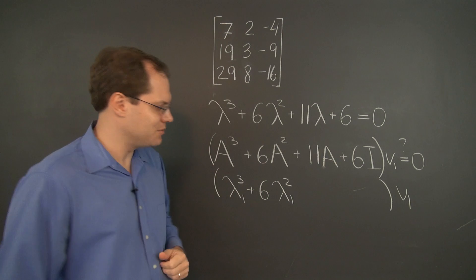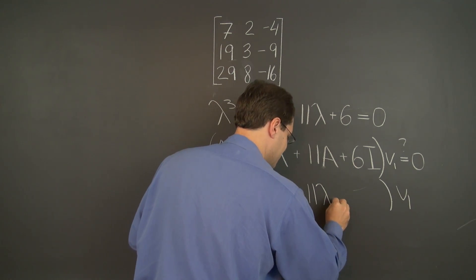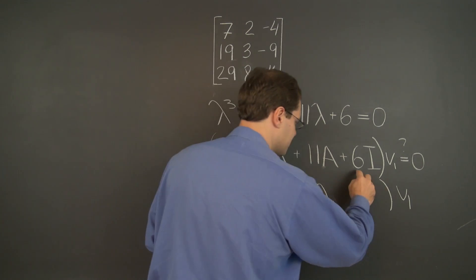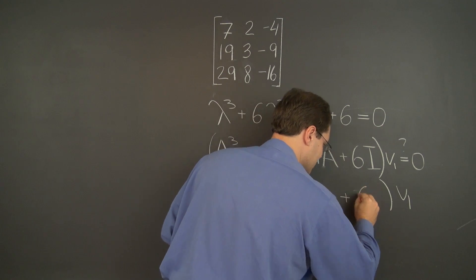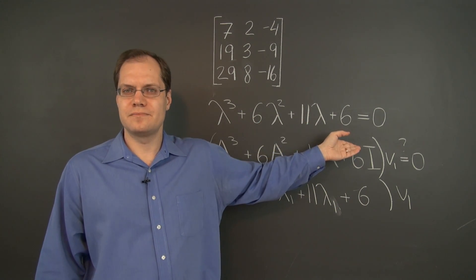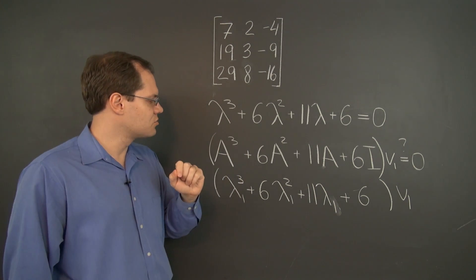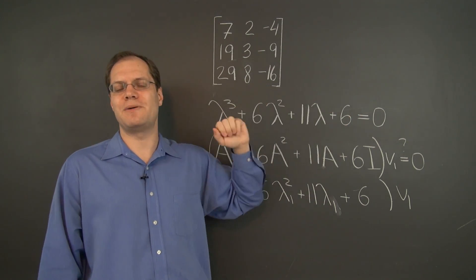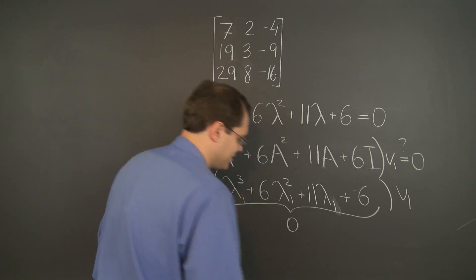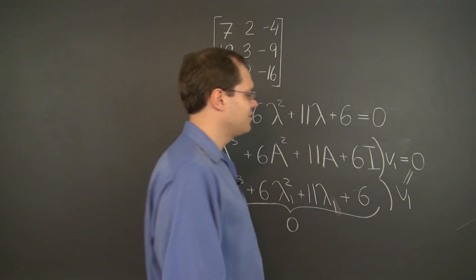Finally, I times V1 is V1, so we have plus 6 V1. Factoring out V1, we recover the characteristic polynomial evaluated at lambda 1. By definition, each eigenvalue is a root of the characteristic polynomial, so this expression is 0. Therefore the result is 0 times V1, which is indeed 0. We can now erase the question mark — we at least know that when this matrix multiplies V1, the result is 0.